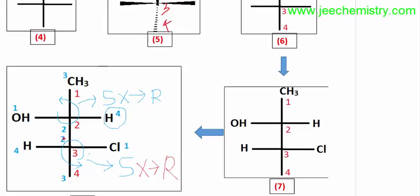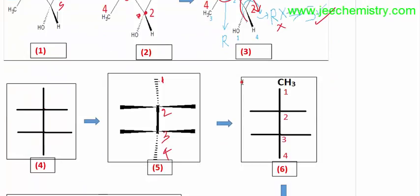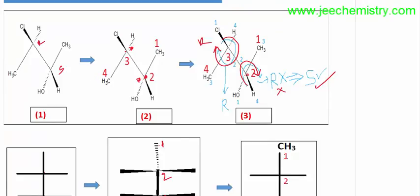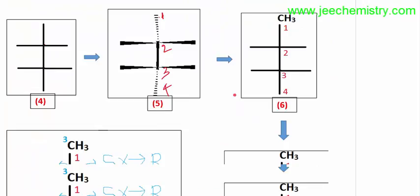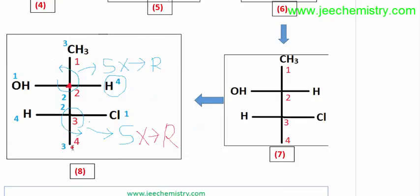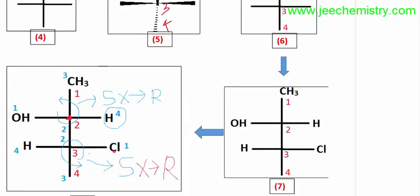Put the groups in a random manner — OH, H on the left side or right side doesn't matter at this stage. We only need to consider the longest chain carbon atoms at the chiral centers. At the second carbon atom, which is a chiral center, attach hydrogen and OH — they may be on the right side or left side; this is just a rough sketch, not a final structure. Then at the third carbon atom, put chlorine and hydrogen in any side — this is only a rough sketch.